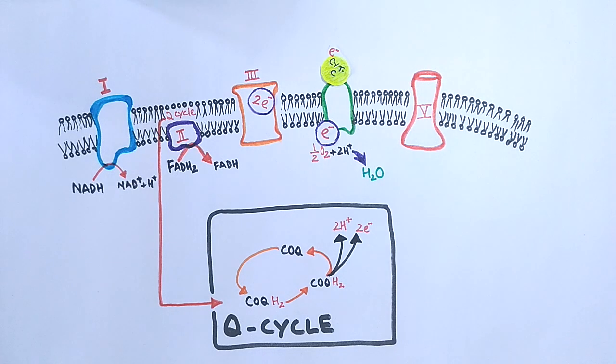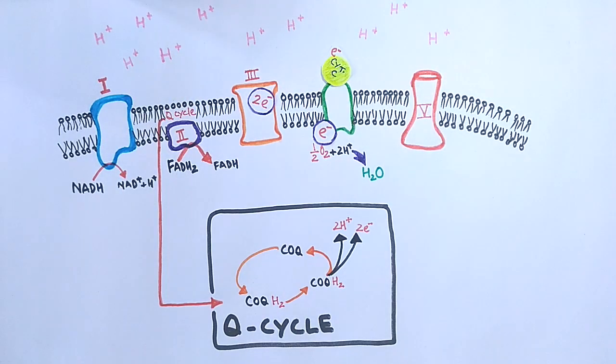Finally, as you can see in this animation, in that transport process the energy of electrons is used to pump the protons out of the matrix. As you can see, the protons assemble outside of the matrix, then these protons will go through the ATP synthase to generate ATPs.